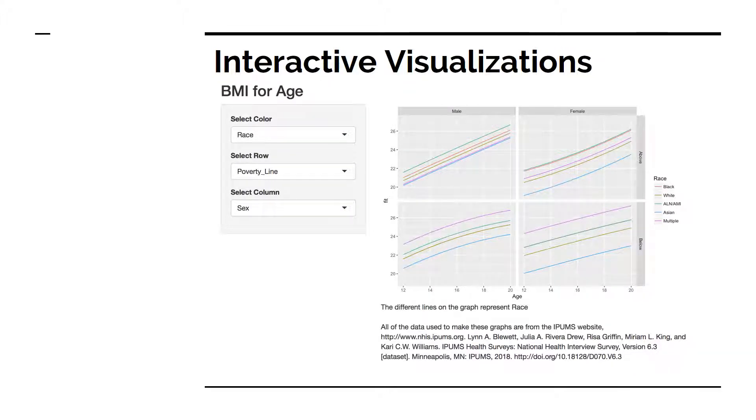Interactive visualizations were made using the shiny package in R to create an application that allows users to choose to compare BMI estimates between groups. Users can choose their inputs on the left-hand side, and based off of the inputs, the outputs are reflected on the right-hand side. According to the inputs on the left, this graph is faceted by poverty line and sex and colored by race. The goal here is to analyze how BMI varies depending on race and sex. If one of the inputs change, the graph that appears in the output is different, which reflects a different research question.